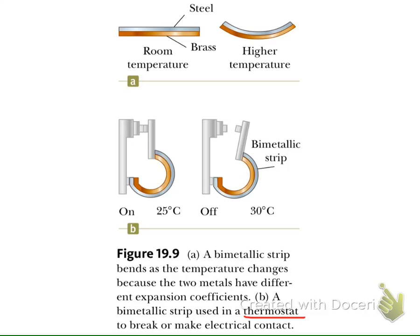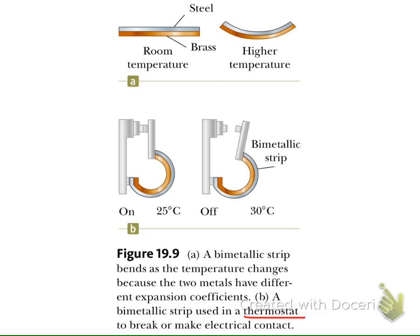and then you heat this metal, these two metals will expand due to thermal expansion, but with different coefficients of linear expansion. So the lengths that these two metals expand are different. As a result, in this example the steel may expand less than the brass, so they bend.